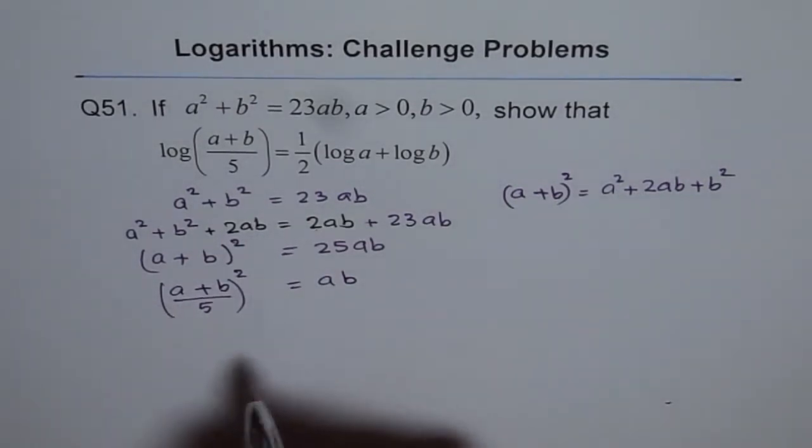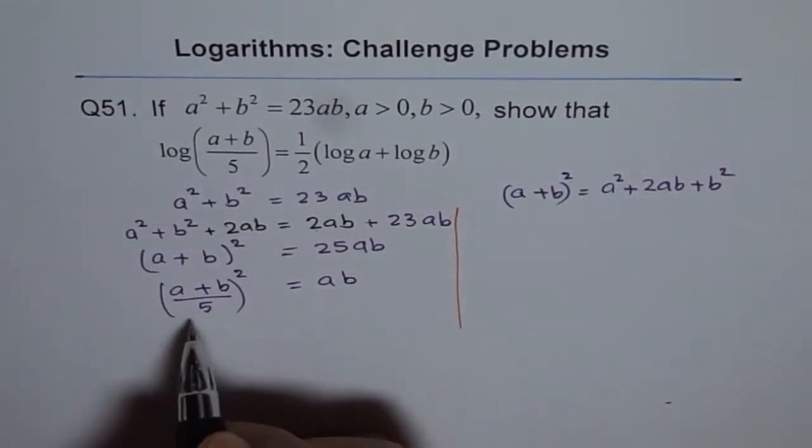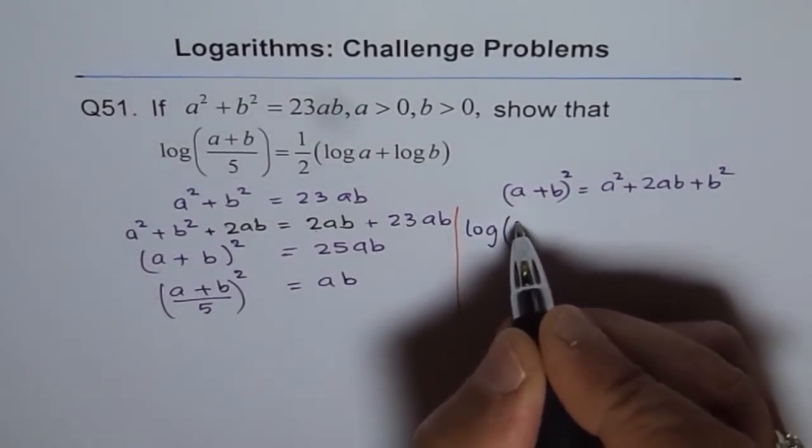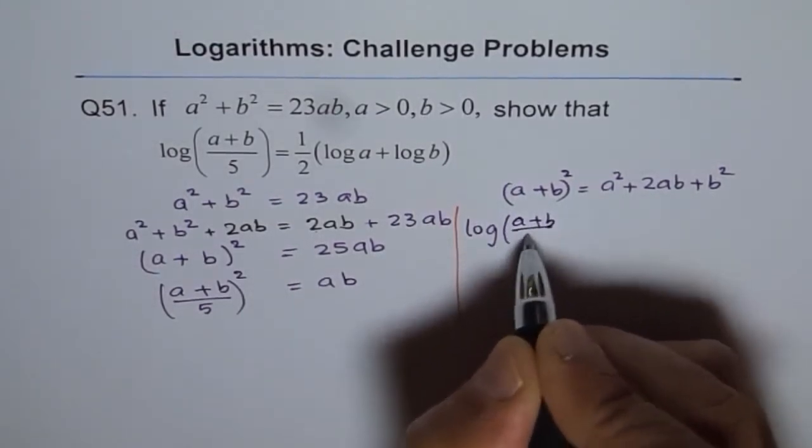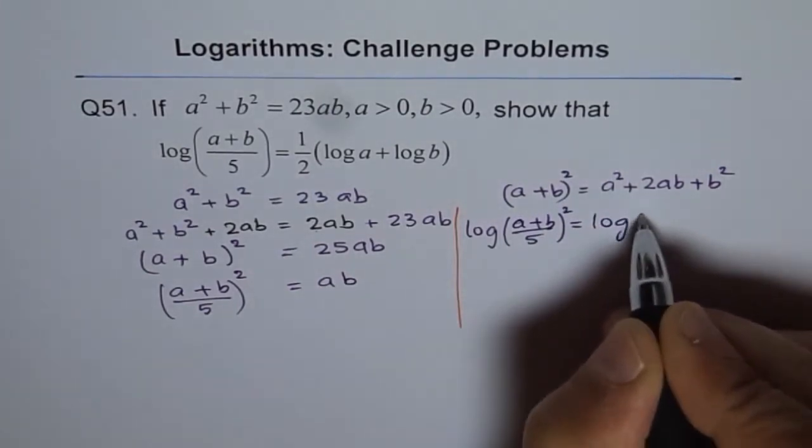If we take log on both sides, then what happens? See here. Let's take log on this side. So we get log of a plus b over 5 whole square equals log of ab.